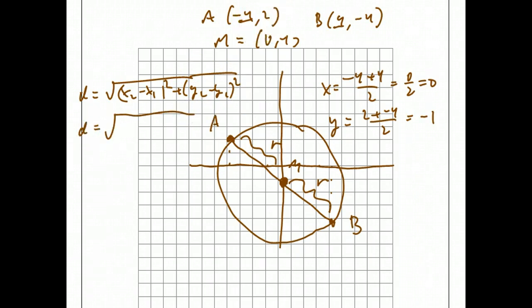Using this, I'll have 0 minus negative 4, which is 4 squared, which is 16, plus minus 1 minus 2 is negative 3 squared is 9. This becomes square root of 25, which equals 5.